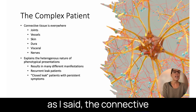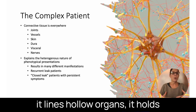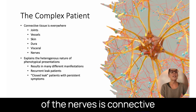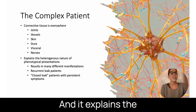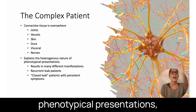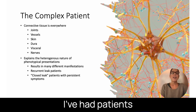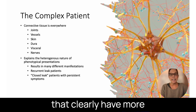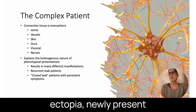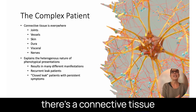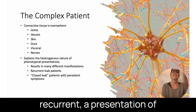Connective tissue is everywhere in the complex patient — the joints, vessels, skin, dura, visceral organs, hollow organs, nerves and their sheaths, and the fascia of the muscles. This explains the heterogeneous and phenotypically varied presentations. I do worry about recurrent leak patients where we're missing a connective tissue disorder. I've had patients with recurrent leaks who clearly have more connective tissue associations — such as newly present tonsillar ectopia or sphenoid sinus dehiscence. Knowing there's a connective tissue disorder makes you look for other causes of symptoms in recurrent presentations.